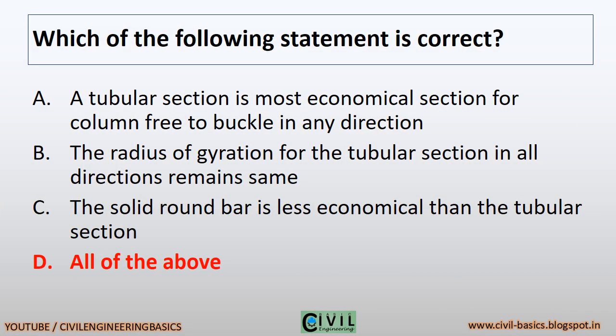Which of the following statements is correct? A tubular section is the most economical section for a column free to buckle in any direction. The radius of gyration for the tubular section in all directions remains the same. The solid round bar is less economical than the tubular section. All of the above statements are correct.